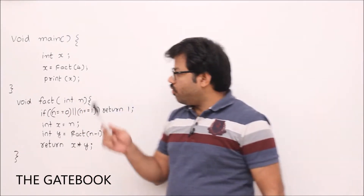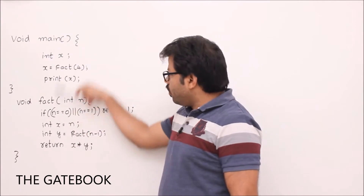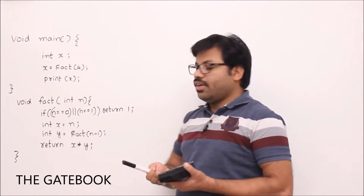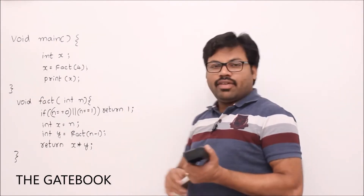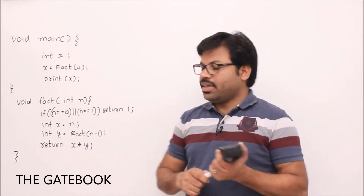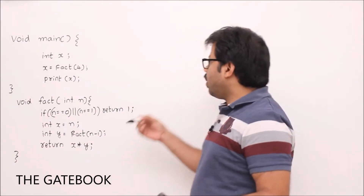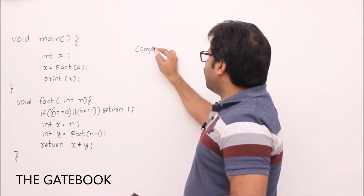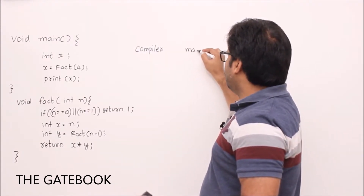In recursion, we also use a stack. Who uses the stack and where? Whenever you write a high-level program, it is converted to a low-level program by your compiler. There is one compiler and there is a machine, and the machine needs to understand these instructions.